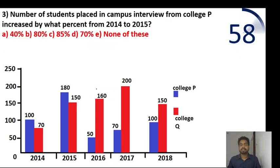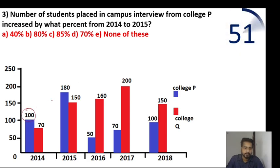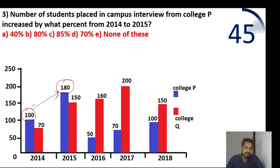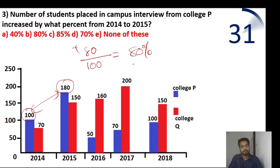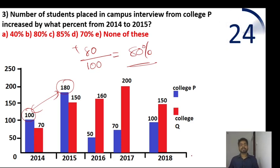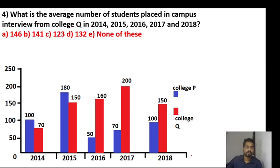Question number 3: number of students placed in campus interview from college P — increased by what percentage from 2014 to 2015? P, blue one — 80 degrees. Question 4: what is the average number of students placed in campus interview from college Q for 2014, 15, 16, 17 and 18? Q average — red one.